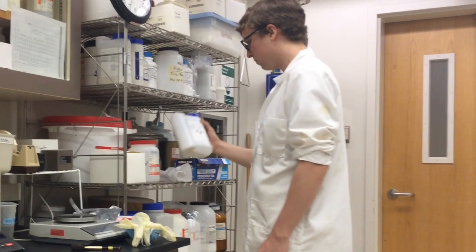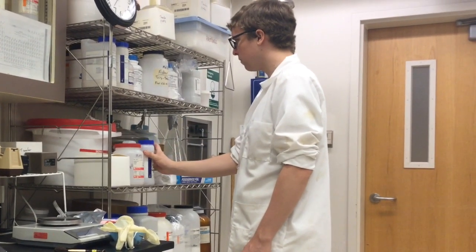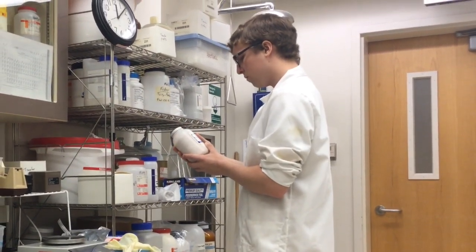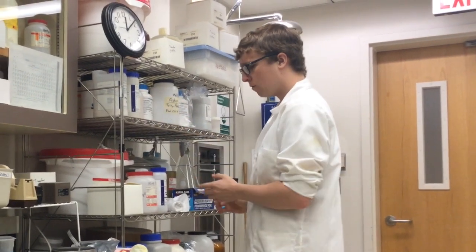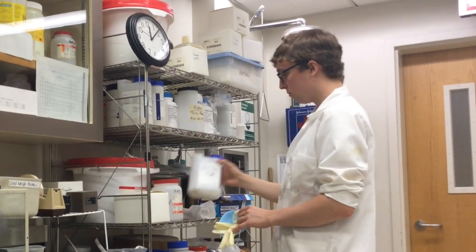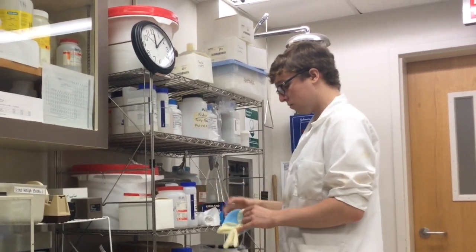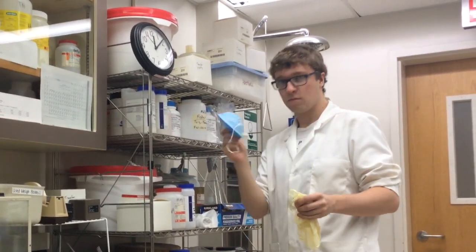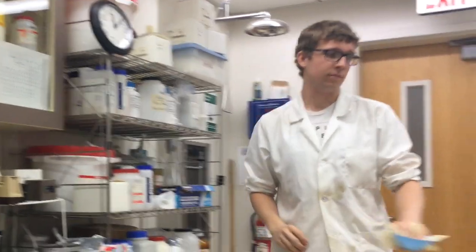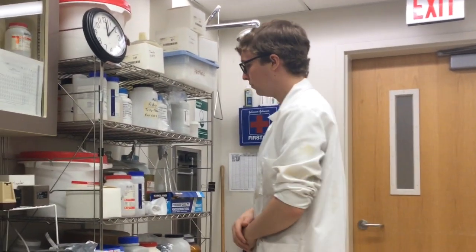Before we begin, let's go over some safety precautions. When working with chemicals, it is important that your skin and eyes never come in direct contact with them. When working with dangerous chemicals or light powders that may become airborne, it is important to take proper precautions by wearing gloves or a mask. In this case, we are just working with sodium chloride, which is the equivalent of table salt, so we will not need to wear gloves or a mask.